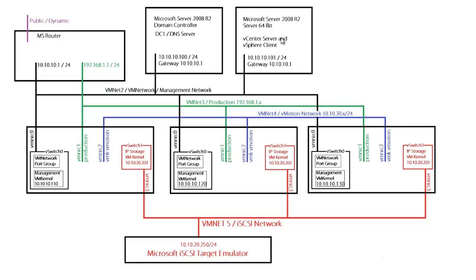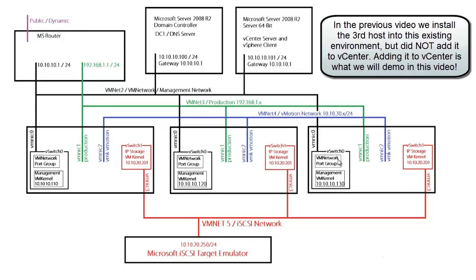In the previous video I showed you how to add in this third host. It wouldn't really matter whether it was the first, second, or third host - in the previous video it was better to give you an idea of the lay of the land and what a built-out environment network would look like, so that when you're installing your host you have an idea of what you're installing it into. What we did in the previous video is we installed the host and it's ready now to be joined into vCenter.